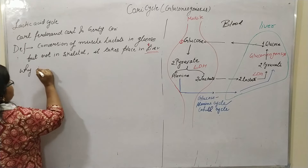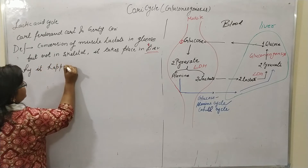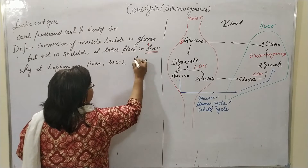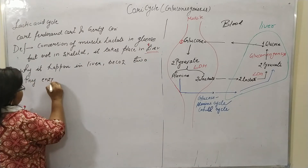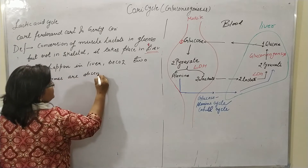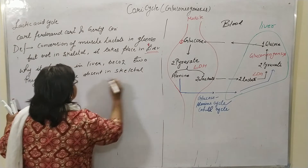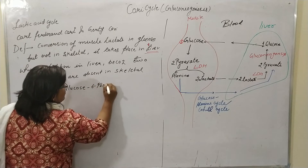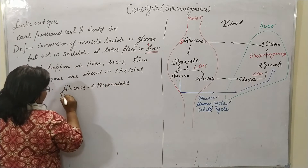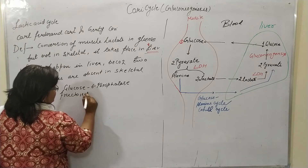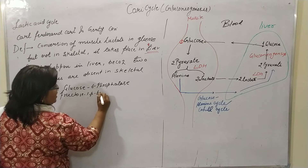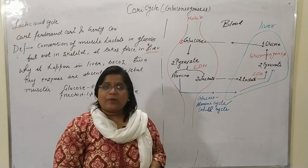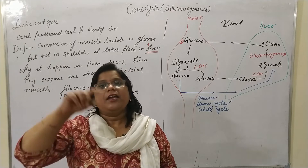Why does this conversion happen in the liver? Because two key enzymes are absent in skeletal muscle: the first is glucose-6-phosphatase and the second is fructose-1,6-bisphosphatase. These are the two main enzymes absent in skeletal muscle, which is why the conversion of lactic acid into glucose happens in the liver.